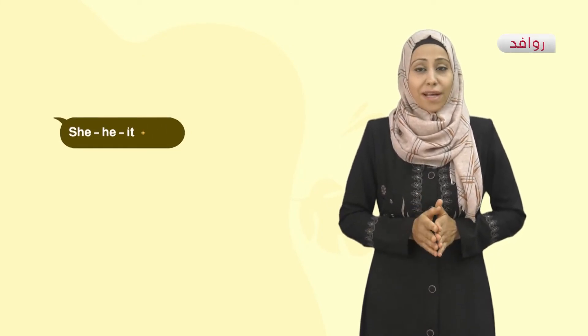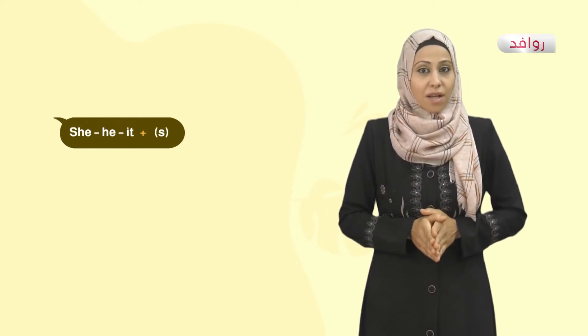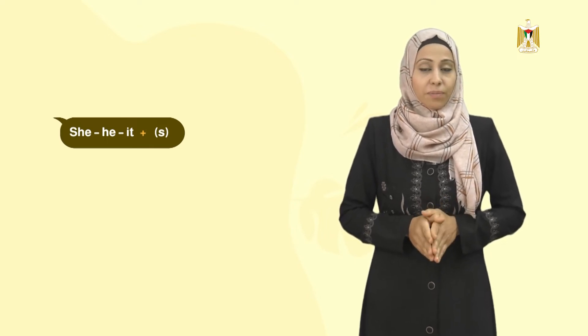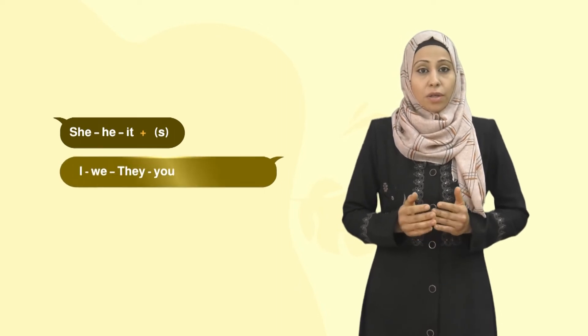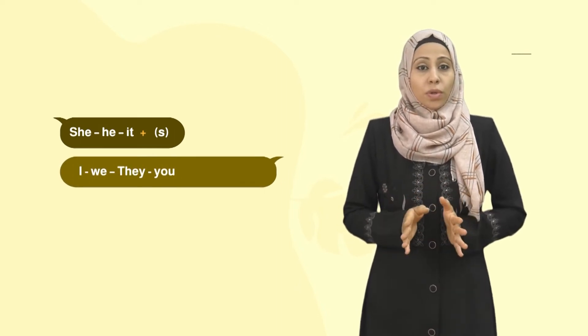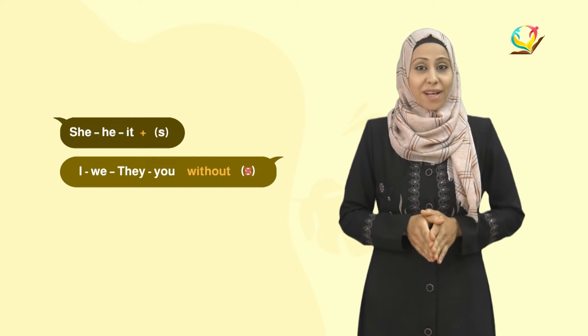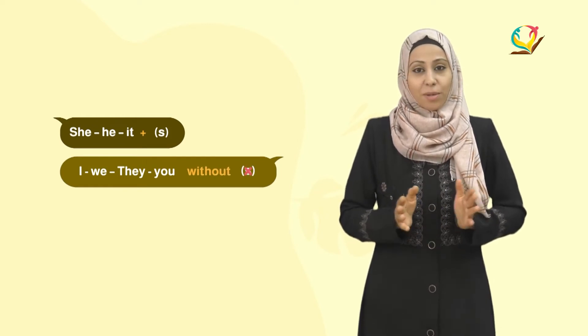If you look at these examples, you will notice that we use this tense to express scientific facts or daily routines. We add 's' to the verb with singular subjects — he, she, it — or when we mention a singular person's name. With pronouns I, we, they, you, the verb stays the same without adding 's'. We call this tense the Present Simple. مضارع بسيط.